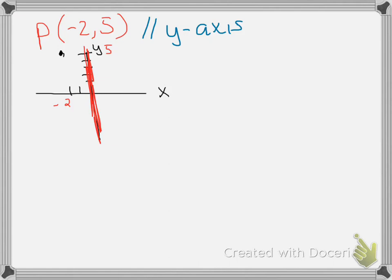So if I see the point here, which is negative 2, 5, remember this is x, and this is y. If you notice, if I go across, if I go this way, that's parallel to the x-axis, but it's also perpendicular to the y-axis.